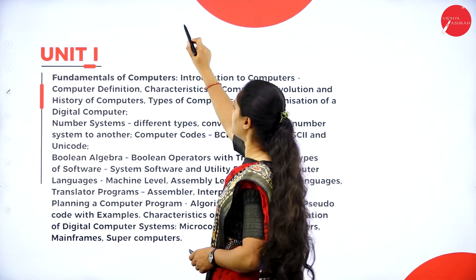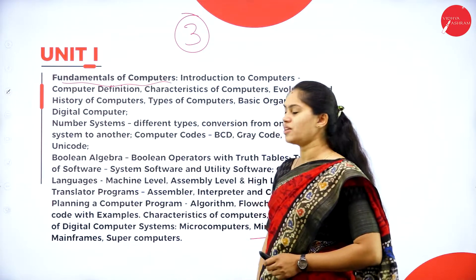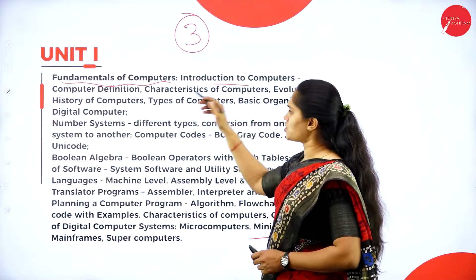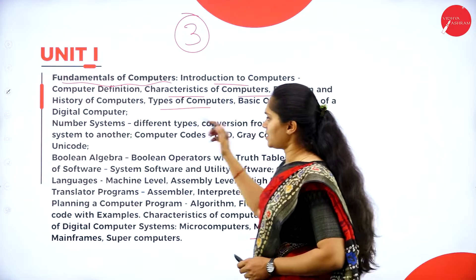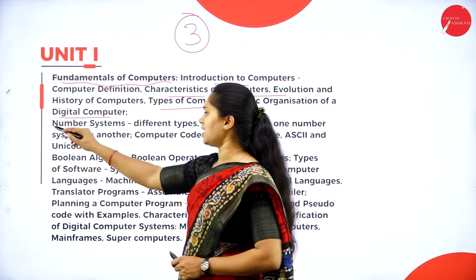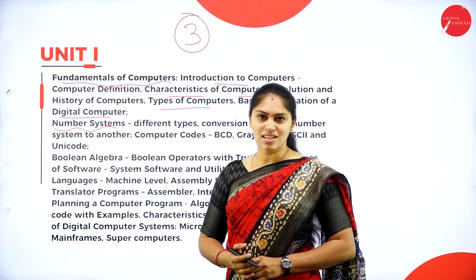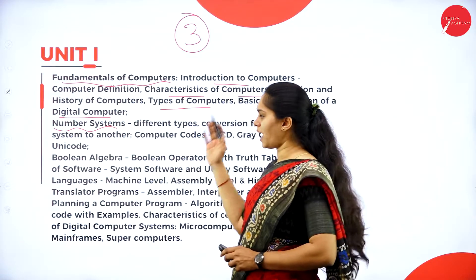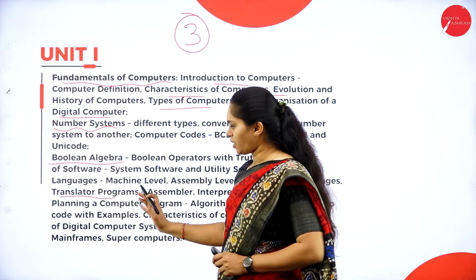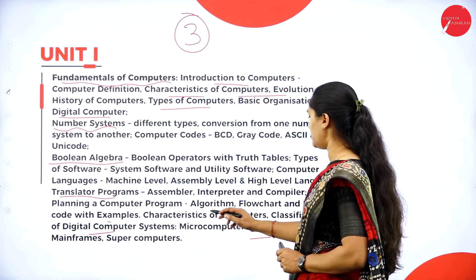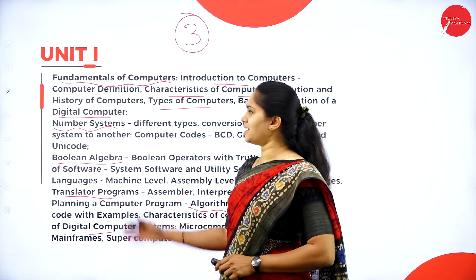We have three units in Fundamentals of Computers. Unit one covers computer introduction, its characteristics, evolution, classification, types, and organization of digital computers. You will also learn about the number system — how to convert any number system to binary, since computers understand only zeros and ones — along with Boolean algebra, translator programs, digital computers, algorithms, and flowcharts.